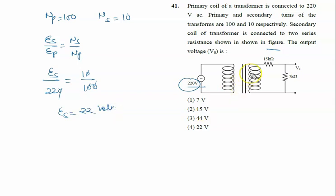This is the voltage produced at the secondary coil. Now we have to calculate the value of V₀, what is the output voltage. Output is taken across 7 kilo ohm, so we will write V₀ = I × R.